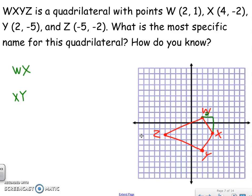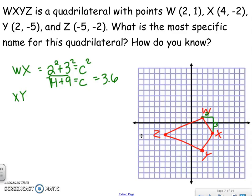For WX and XY, I draw my right triangle. That length was 2 and this length was 3. So 2² + 3² = c², giving 4 + 9 = 13, and the distance is √13 ≈ 3.6.